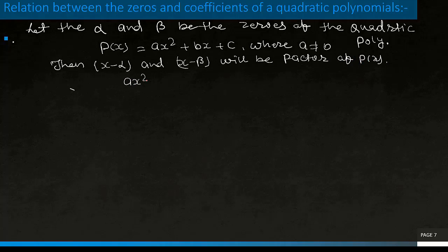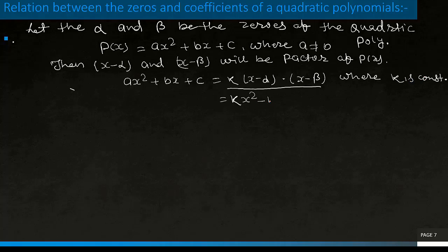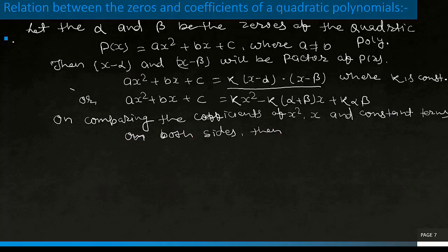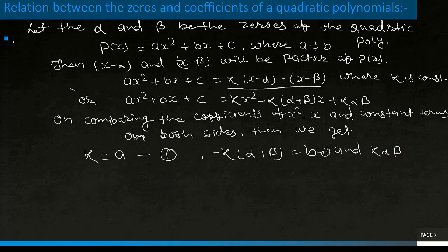Hence, ax² plus bx plus c is equal to k(x minus alpha)(x minus beta), where k is a constant. Expanding: k·x² minus k(alpha plus beta)·x plus k·alpha·beta. On comparing the coefficients of x², x and the constant term on both sides, we get: k equals a, minus k(alpha plus beta) equals b, and k·alpha·beta equals c.